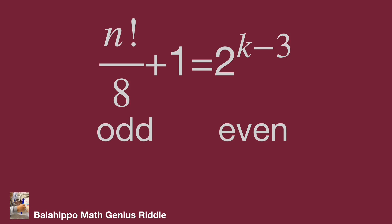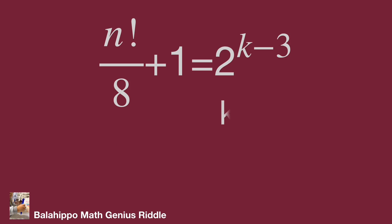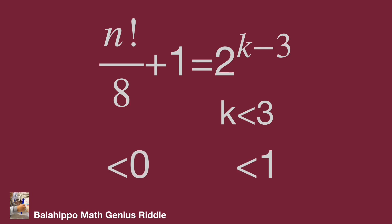Another constraint on k: if k is less than 3, then k minus 3 is negative, so 2^(k−3) becomes a fraction less than 1. That would make n factorial over 8 negative, which is also false. So k must be at least 3.